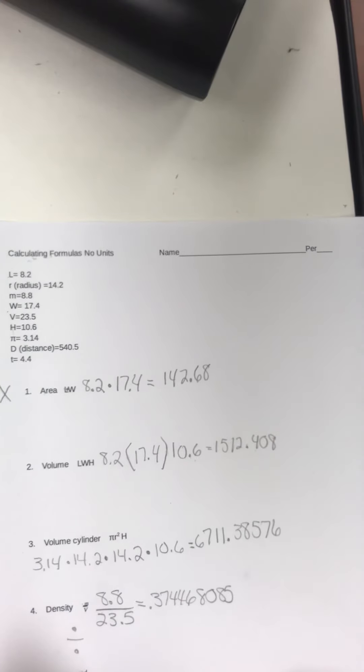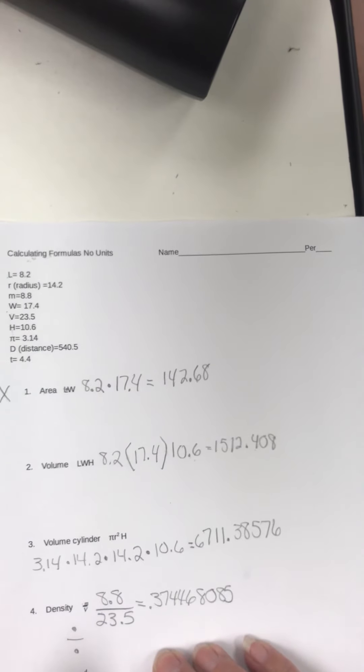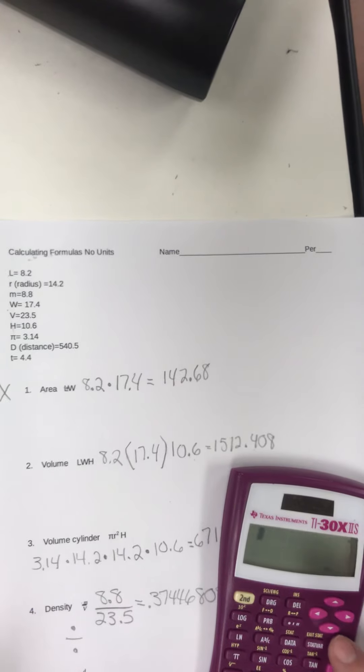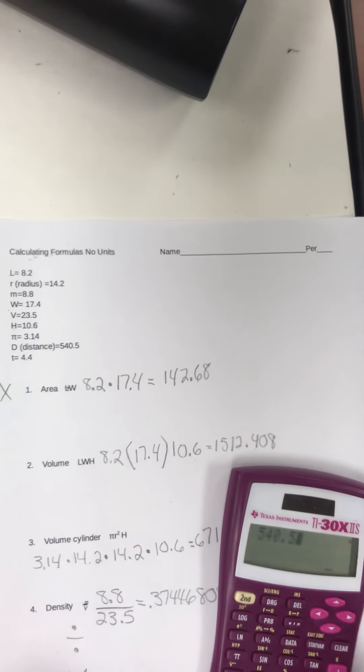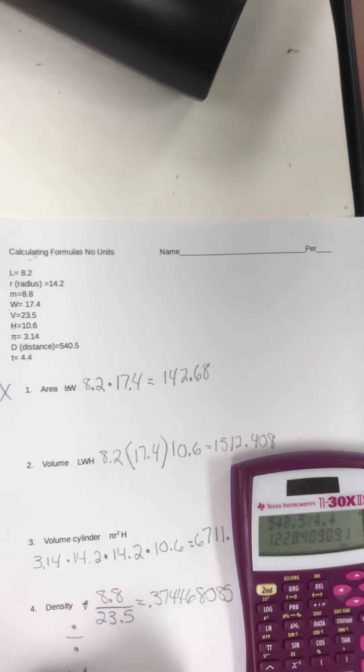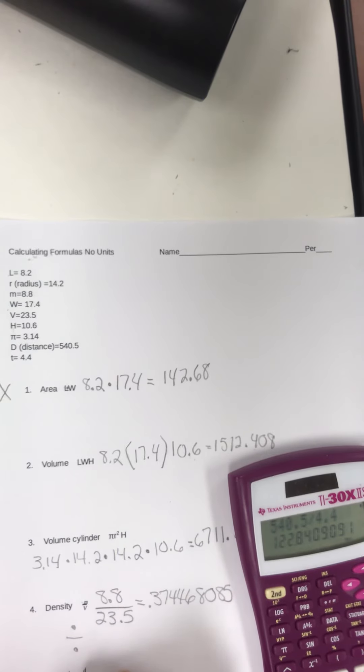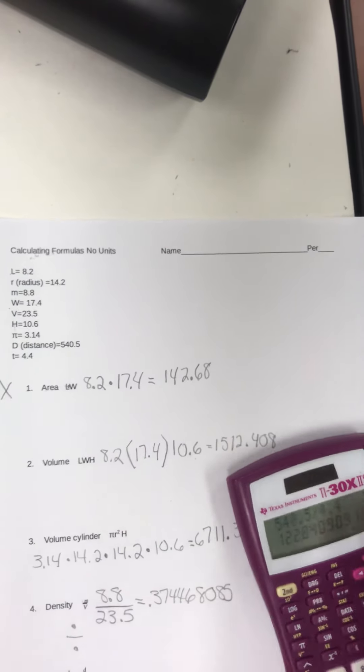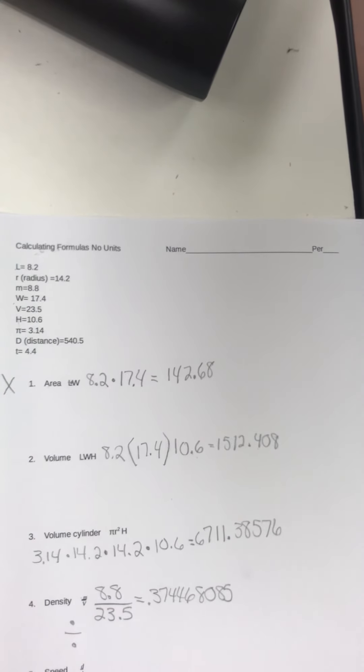All right. Speed is another fraction. So I got distance or D on top. So 540.5 over time on the bottom, 4.4. So I would take my calculator and I'd say 540.5 divided by 4.4 equal and I get 122.8409091. Now, the next lesson we have, we're going to have units on there and we're going to have to figure out what unit goes on it and round to significant digits or sig figs. So hopefully we'll be ready to go. We'll be right back.